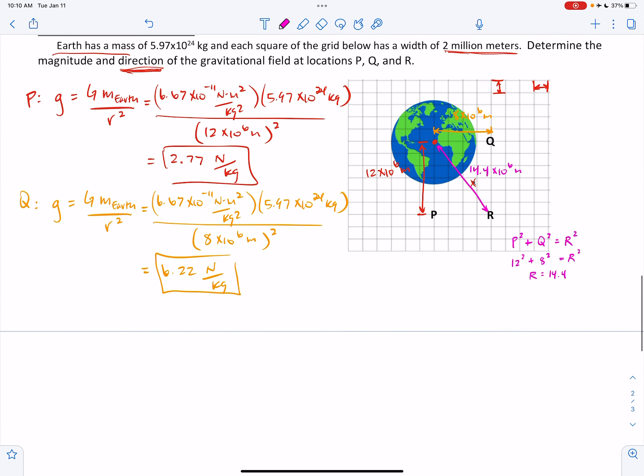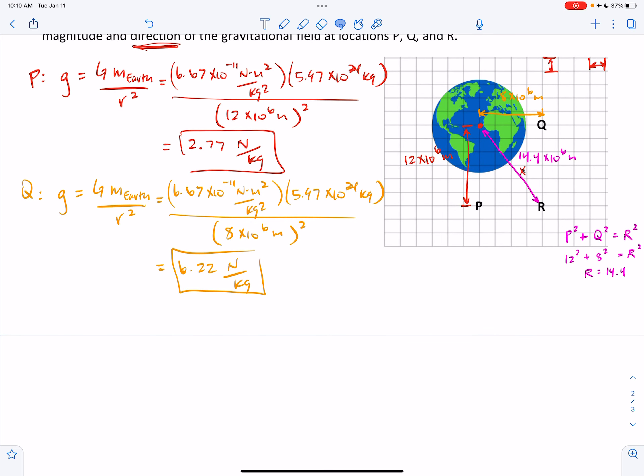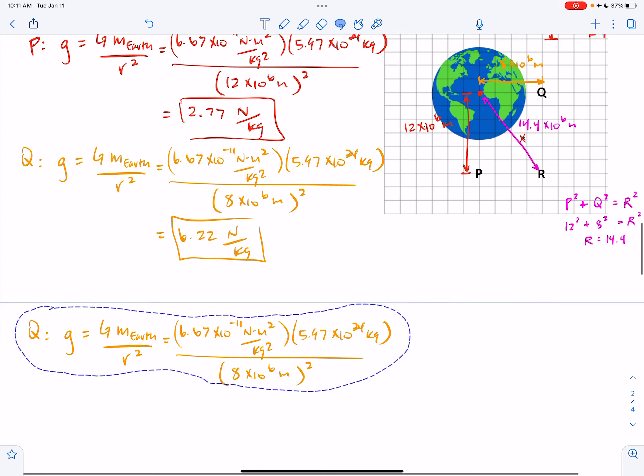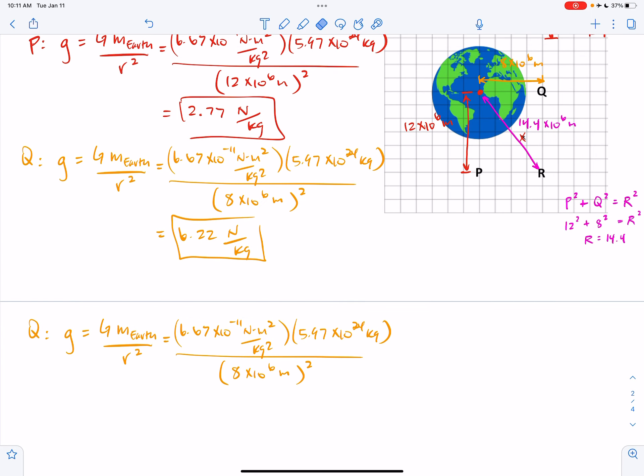So I am again going to do very similar work. I'm just going to copy my math from before and make a couple of changes. So if I want to find the distance to R, let me stay with my colors here.